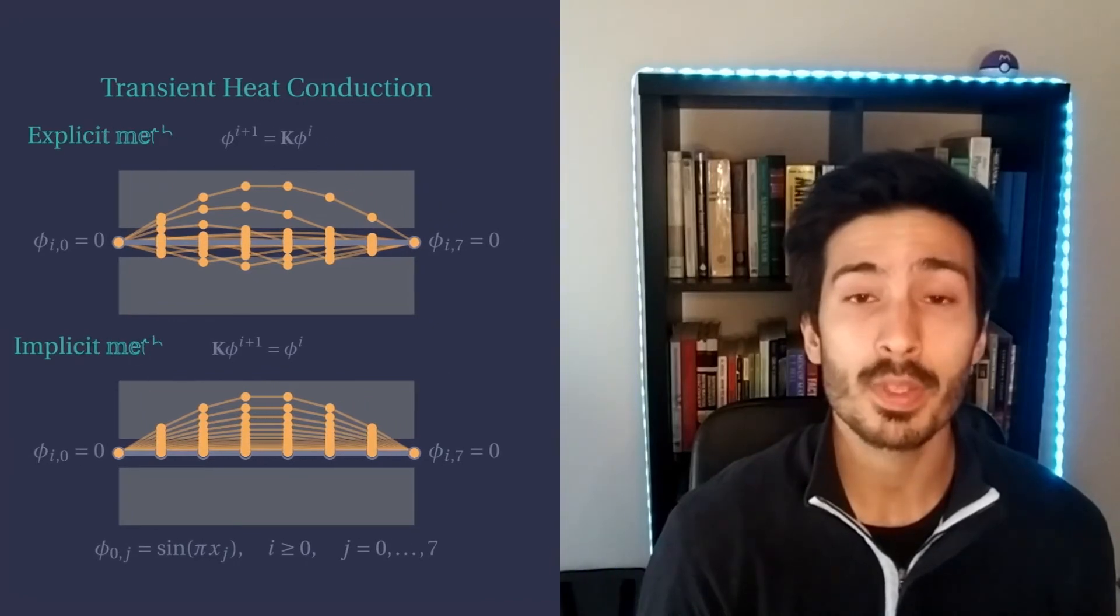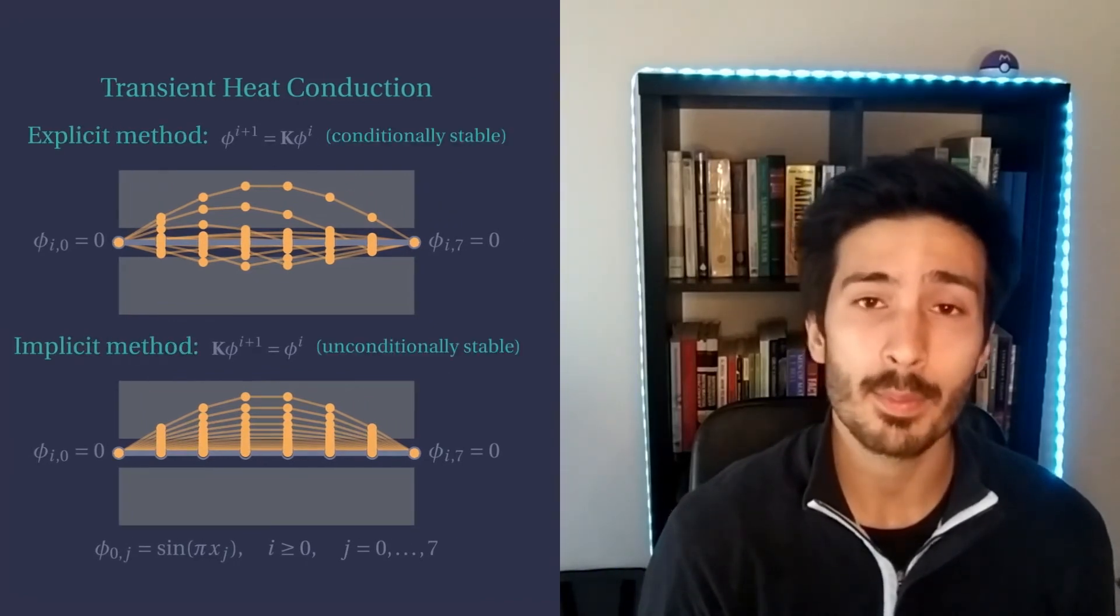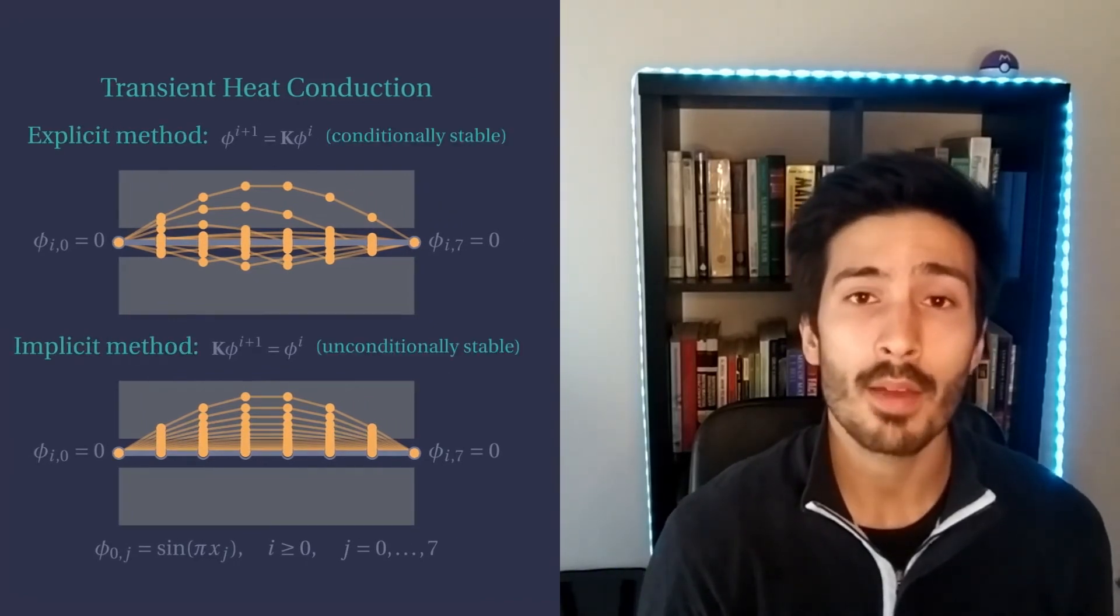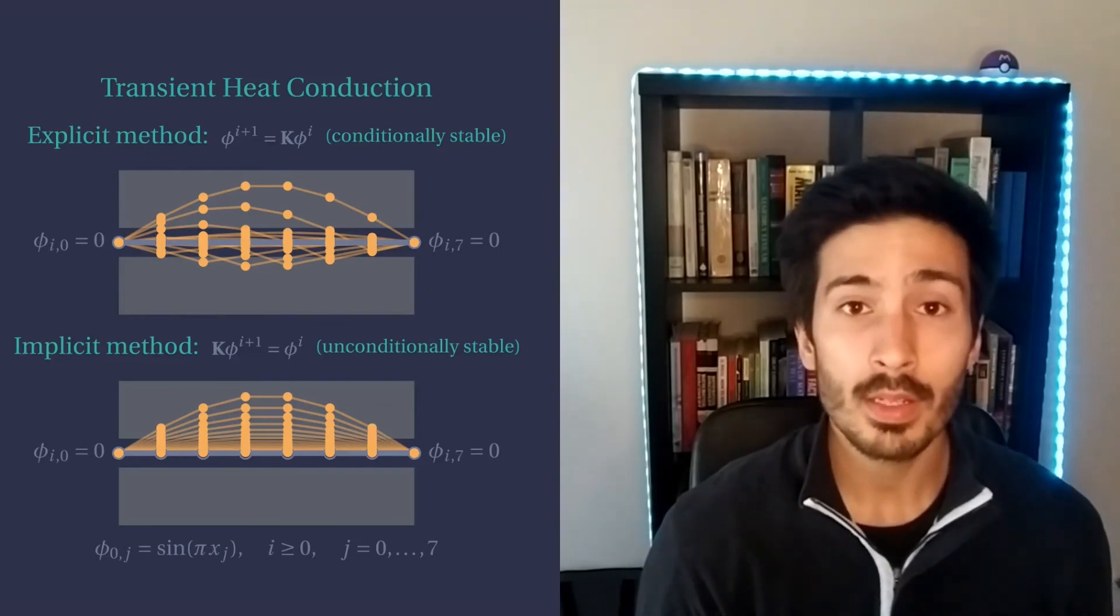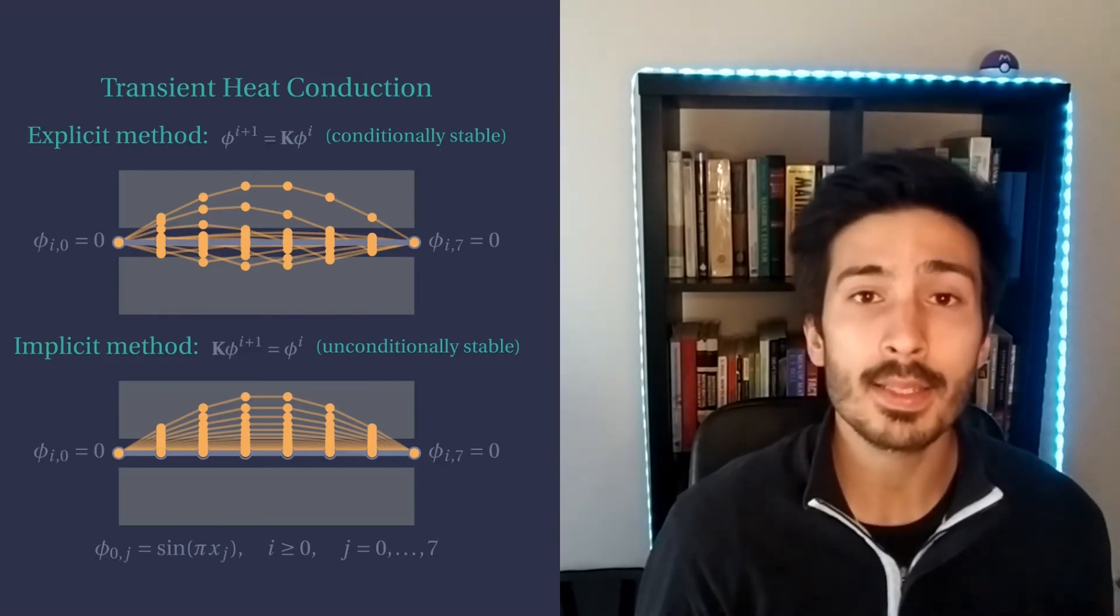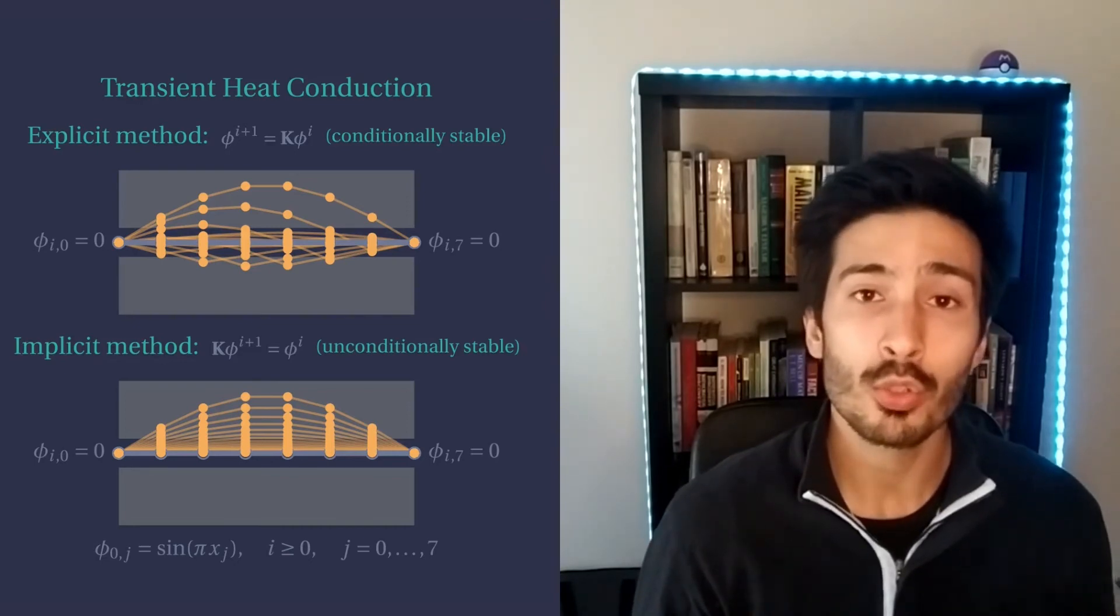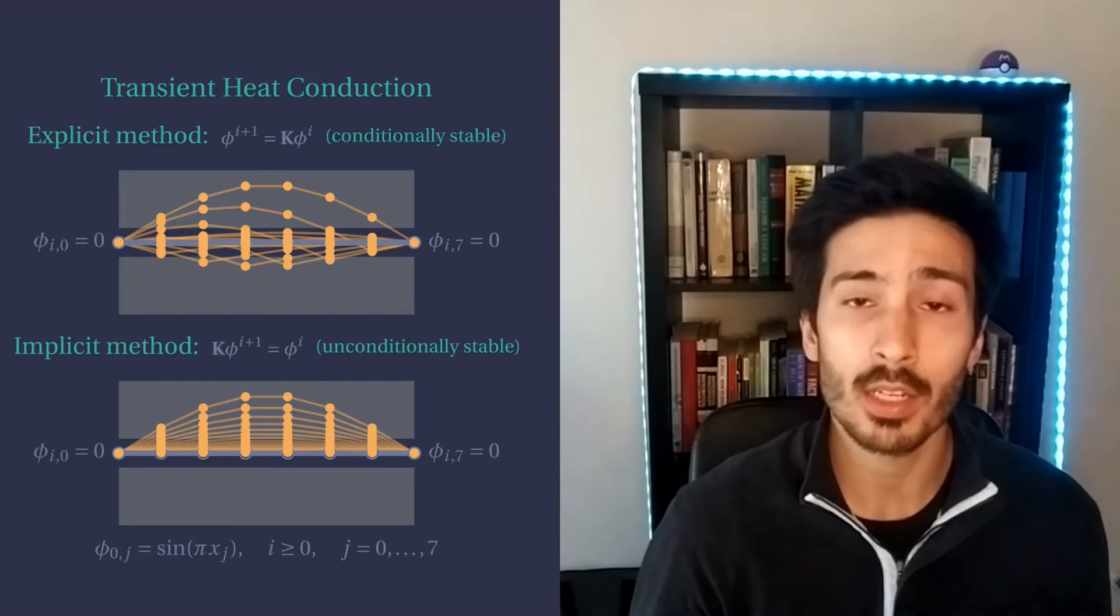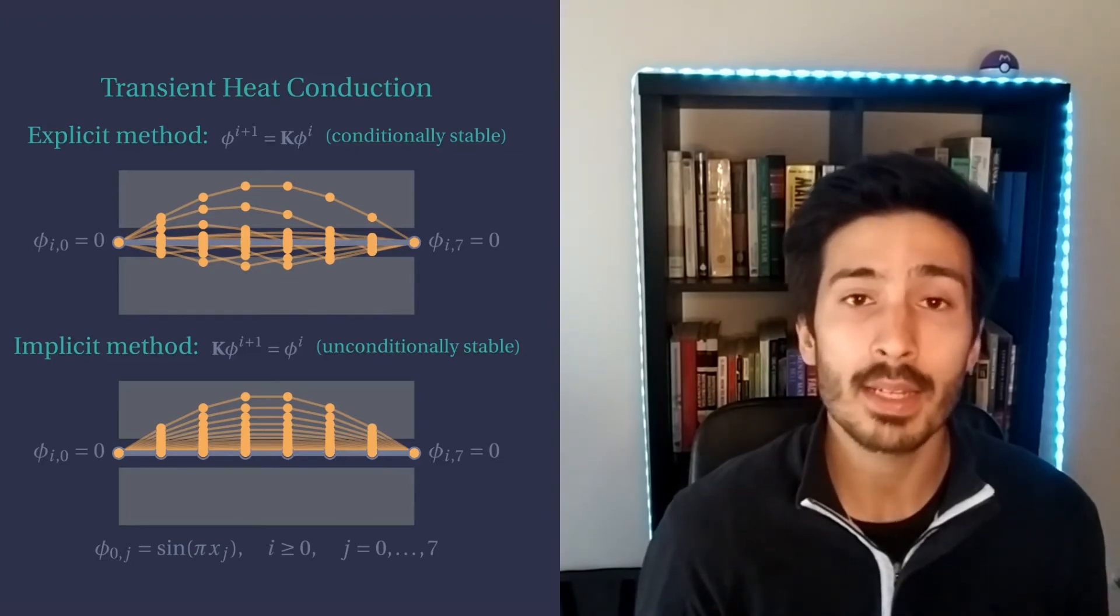If for your specific problem, the critical time step is very small, you will have to take a lot of steps to get to where you want to go. Even if each step can be solved very quickly, this can add up to a very long time. With the implicit scheme, we can just choose a larger time step and take less steps to reach the end of the simulation without being afraid that it will become unstable.